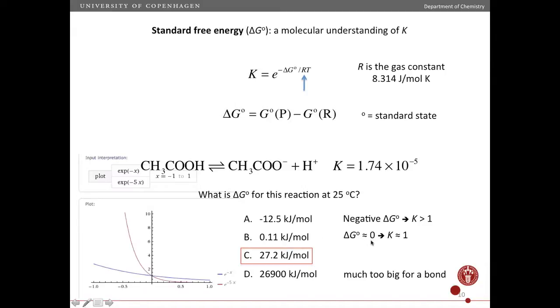As we'll see, this delta G standard is so close to 0 and that would apply an equilibrium constant that's close to 1. In fact, it's very small. And this is much too big for a bond. This is way too much energy to break an ionic bond, as we see here.